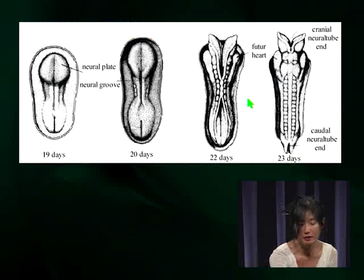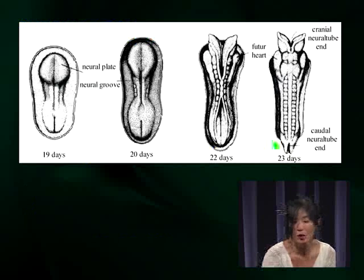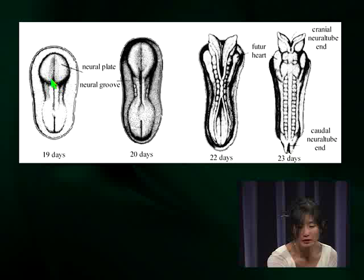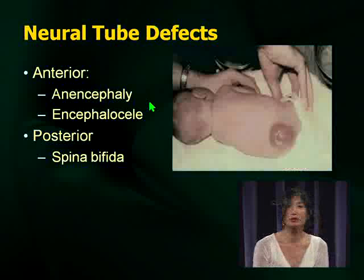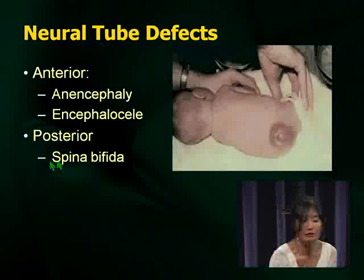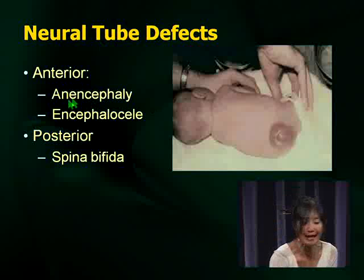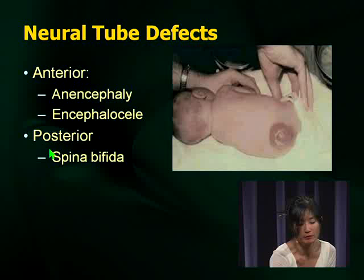This gives you an anatomical sense of why things happen with neural tube defects, because early you have the neural plate forming, then the neural groove, and then closure of the caudal and cranial ends. What neural tube defects are there? There are anterior and posterior defects. Anencephaly and encephalocele are anterior defects, whereas the posterior defect you need to know about is spina bifida.